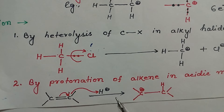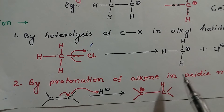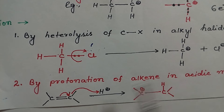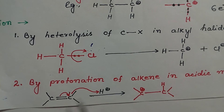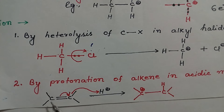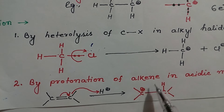By protonation of an alkene in acidic medium, carbocations may also be generated. Take an alkene and treat it with an acid. Initially, the C=C double bond will undergo an electromeric effect. As a result, one carbon will become negatively charged and the other carbon will become positively charged. The carbon with the negative charge will attack the proton, thus forming a carbocation.